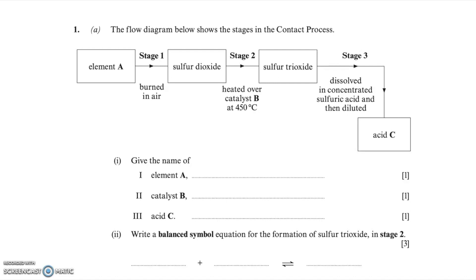So first let's go through the answers to part A. Question 1A shows a flow diagram of the contact process: element A is burned in air to produce sulphur dioxide, then sulphur dioxide is heated over a catalyst at 450°C to form sulphur trioxide, then dissolved in concentrated sulphuric acid and diluted to form acid C. The first question asks for the name of element A — the answer is sulphur. Sulphur is burned in air where it reacts with oxygen to form sulphur dioxide.